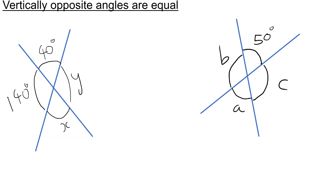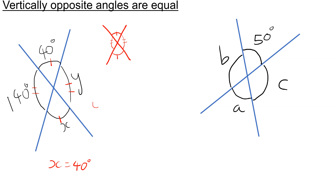Vertically opposite angles are equal. So if you draw two straight lines, you form two pairs of mutually equal angles. So here, if we look at the first one, we can see X and 40 are opposite, so X equals 40 degrees. And Y and 140 are opposite, so Y is equal to 140 degrees.